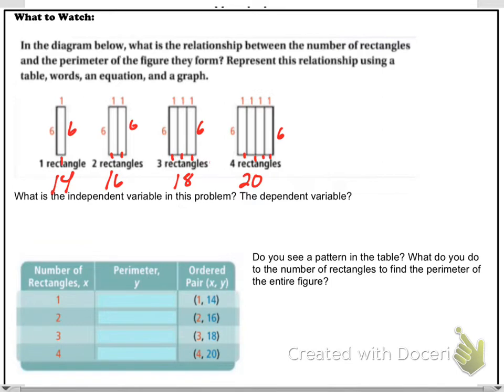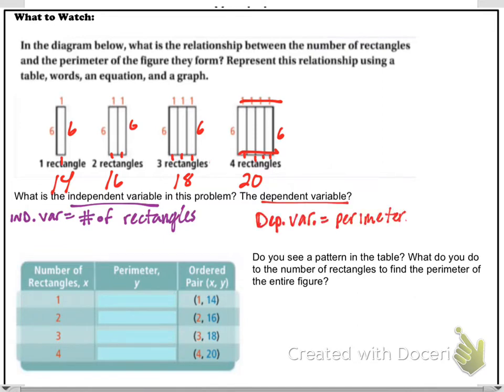So what is the independent variable? The independent variable would be the number of rectangles. The dependent variable would be the perimeter.